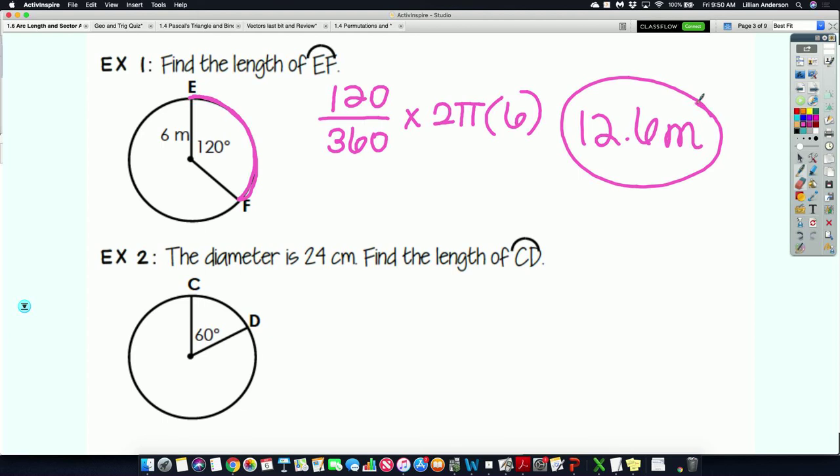Now it says the diameter of this circle is 24 centimeters, and we want to find the length of CD. Diameter. What's the definition of diameter? This is across the circle going through the middle, specifically. So if the diameter is 24, what's the radius? Because it is always half. So yes, a little bit of work to help you in figuring out the length of CD. So again, it's your angle over 360 times 2 pi 12.